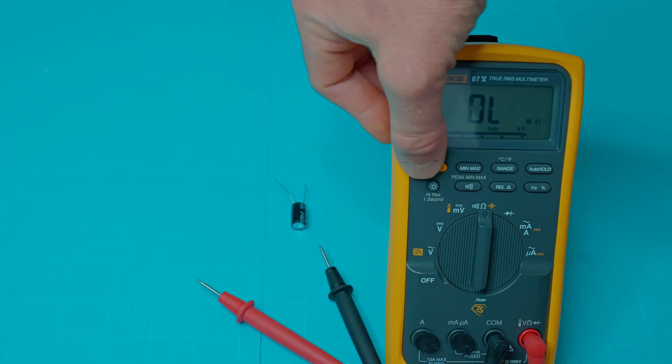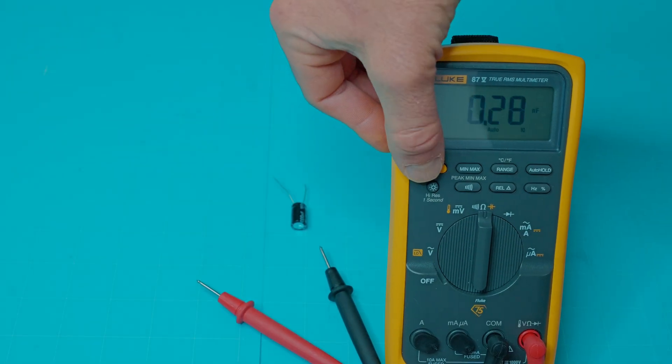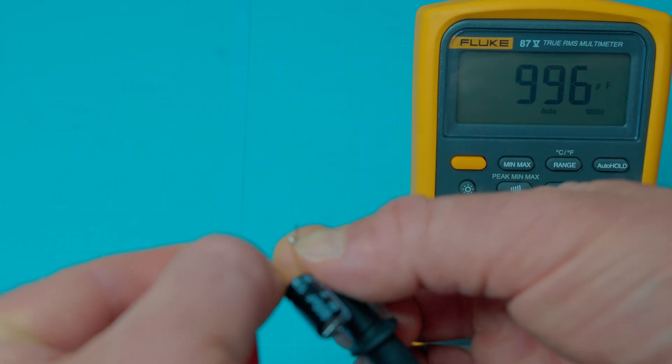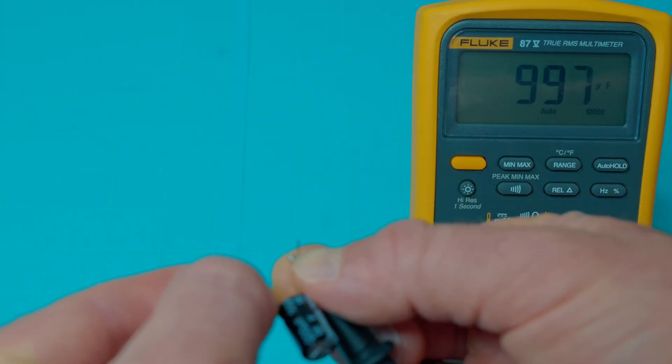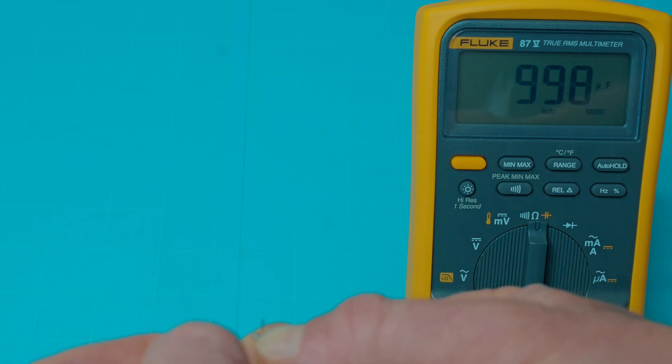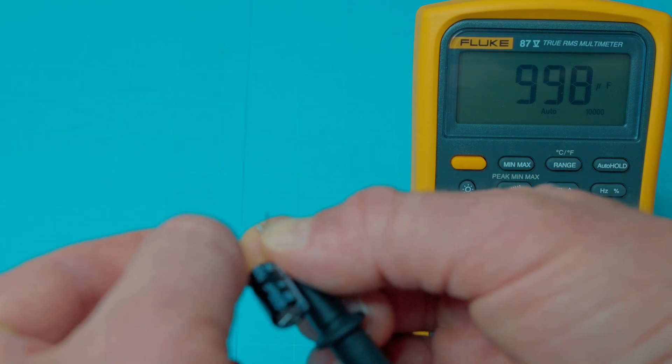I'll flip it up, I have to hit the shift button, get it into the capacitance mode. As you can see, I'm touching the red and black meter leads to each side of the capacitor terminal, and we're getting right around 997. It's fluctuating a little bit, but it's supposed to be 1,000 microfarads. We know that this capacitor is working.